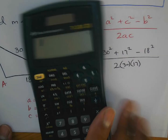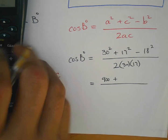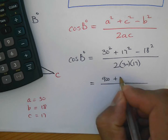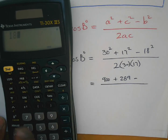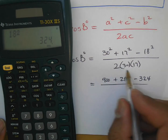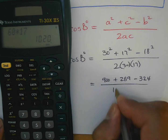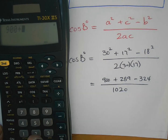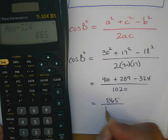Now calculating: 30² = 900, 17² = 289, 18² = 324. On top: 900 + 289 − 324 = 865. On the bottom: 2 × 30 × 17 = 1020. So cosB = 865 / 1020.